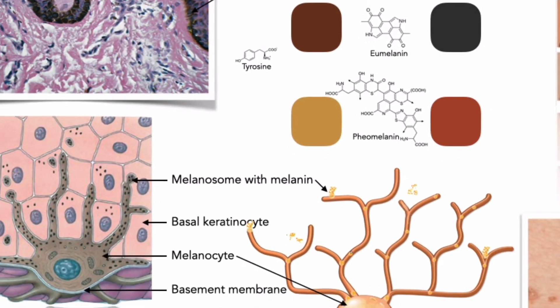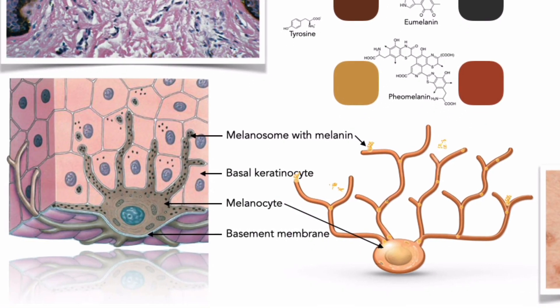To further clarify: melanosomes travel within processes of melanocytes and are transferred intact to about 40 basal keratinocytes on average. The transfer of the melanin colors the keratinocyte temporarily until the melanosomes are destroyed as they fuse with lysosomes. In individuals with pale skin, the transfer of pigments takes place in the stratum basale and in the stratum spinosum.